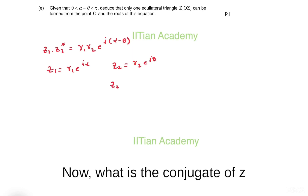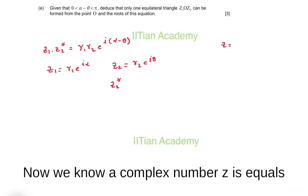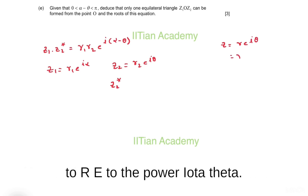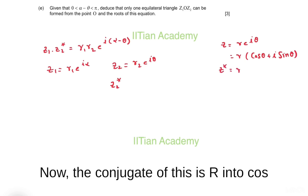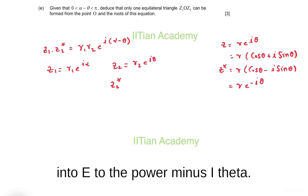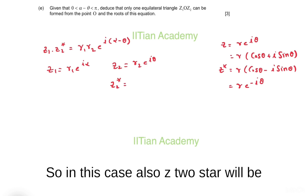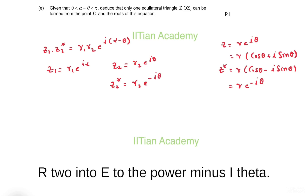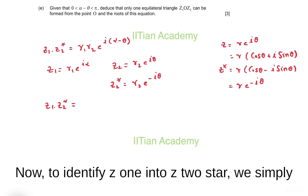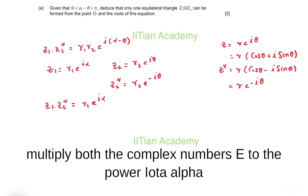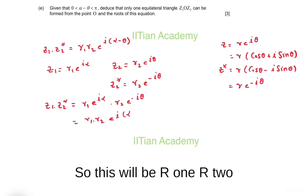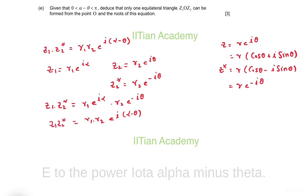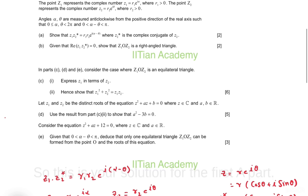We need the conjugate of z2, denoted z2*. We know a complex number z = r·e^(iθ) = r(cosθ + i·sinθ), and its conjugate is r(cosθ − i·sinθ) = r·e^(−iθ). So z2* = r2·e^(−iθ). Multiplying z1 by z2* gives r1·e^(iα) × r2·e^(−iθ) = r1·r2·e^(i(α−θ)), which is the solution for part A.